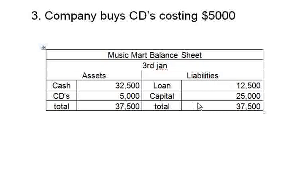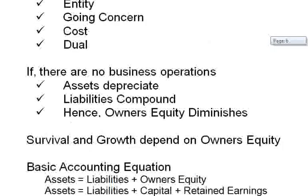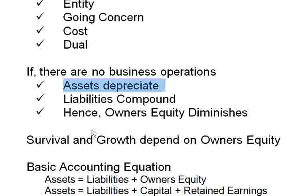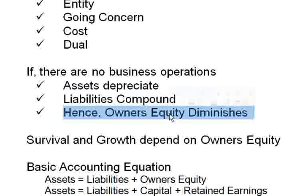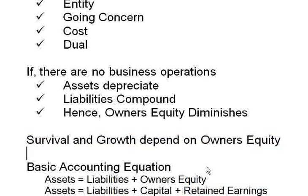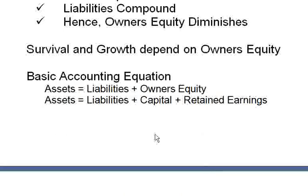If the loan increases by one thousand and CDs decrease by one thousand, then capital has vanished by two thousand to account for both. So when you don't do any business operations, assets depreciate — their value keeps decreasing — liabilities compound — their value keeps increasing — and hence the owner's equity or owner's capital diminishes. Survival and growth depend on owner's equity, so when looking at a business, owner's equity tells you how the business is doing.